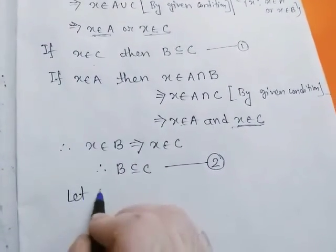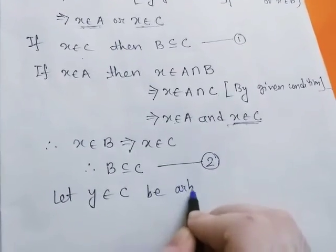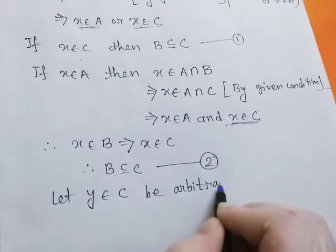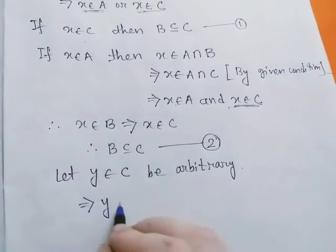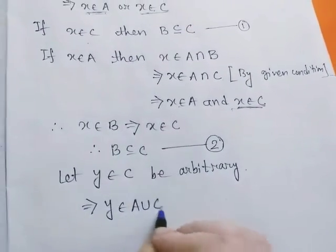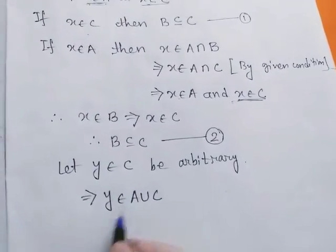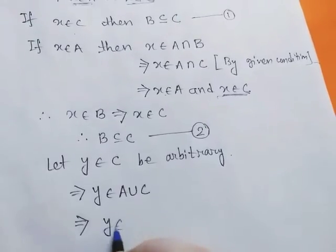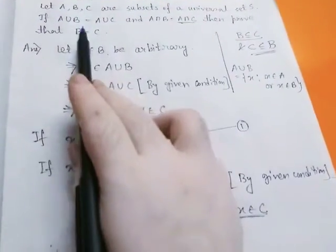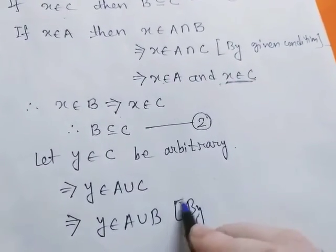Now to prove C subset of B, let y belong to C be arbitrary. This implies obviously y belongs to A union C, because y belongs to C. So obviously y belongs to A union C. This implies y belongs to A union B, by the given condition.